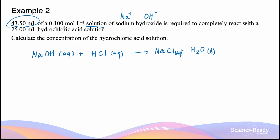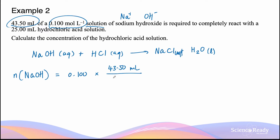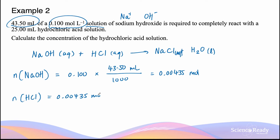We're given the volume and concentration of the sodium hydroxide solution. We can calculate the moles of NaOH by multiplying the concentration in mol per liter by the volume — 43.50 milliliters converted to liters by dividing by 1000. This gives 0.00435 moles. Since the reaction ratio between sodium hydroxide and hydrochloric acid is one to one, the moles of HCl that completely react is also 0.00435 moles.